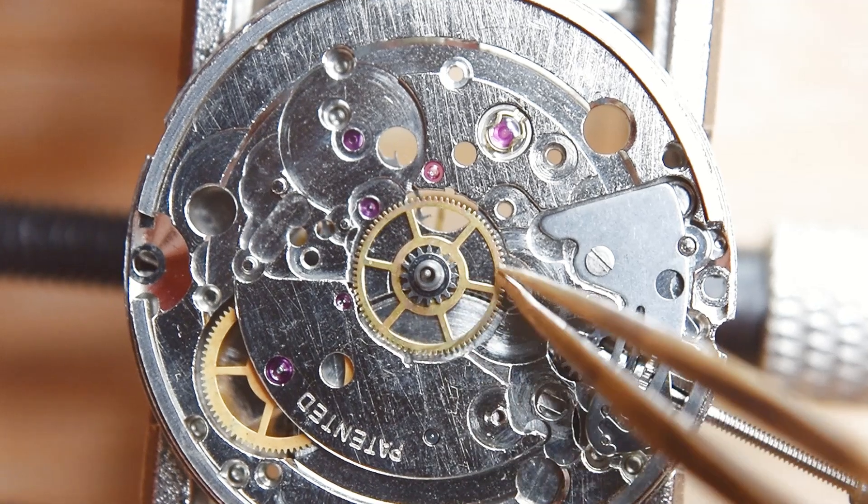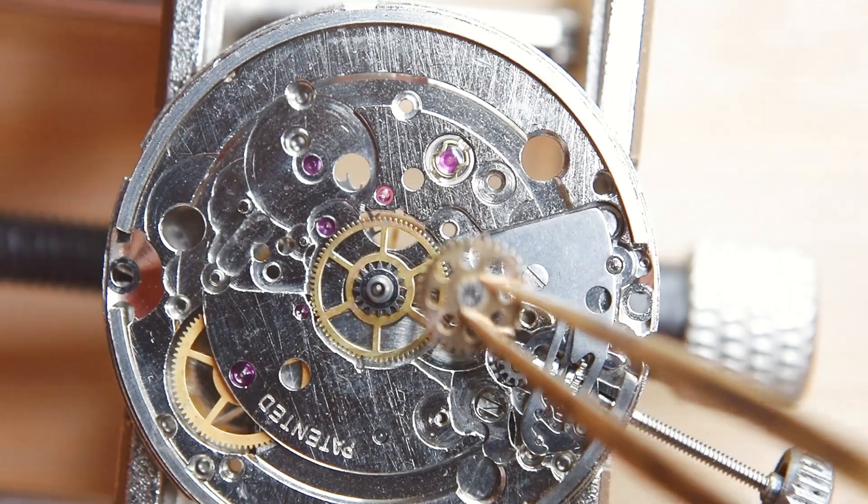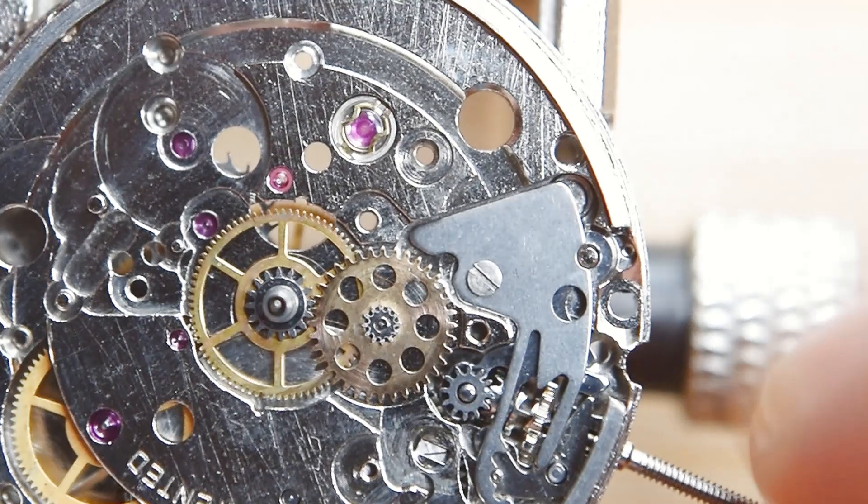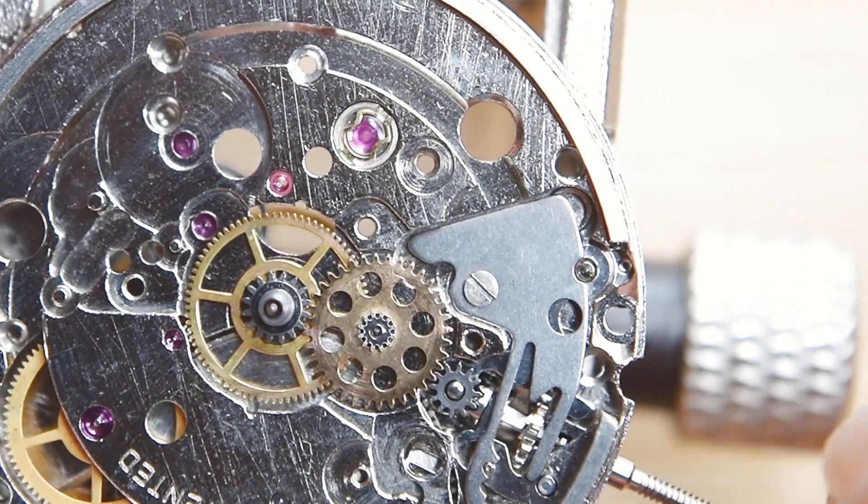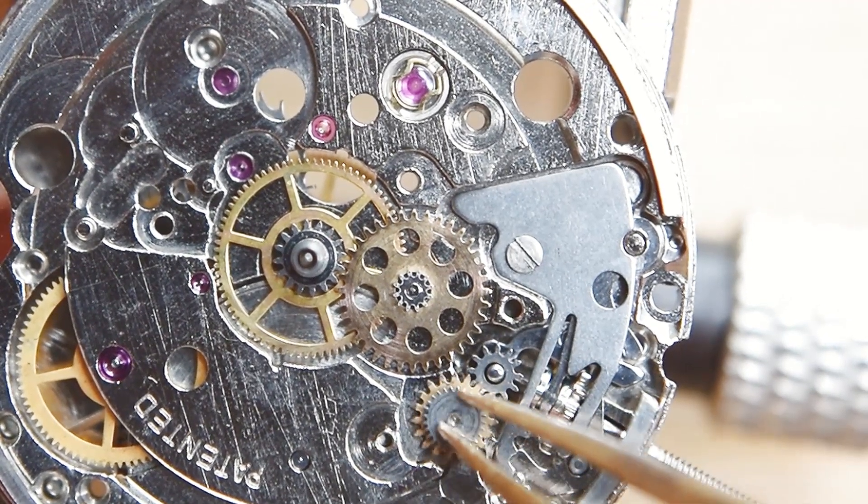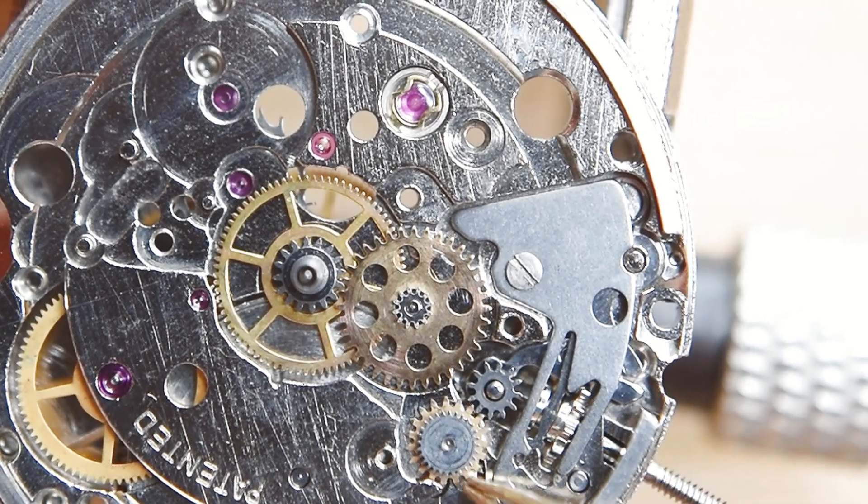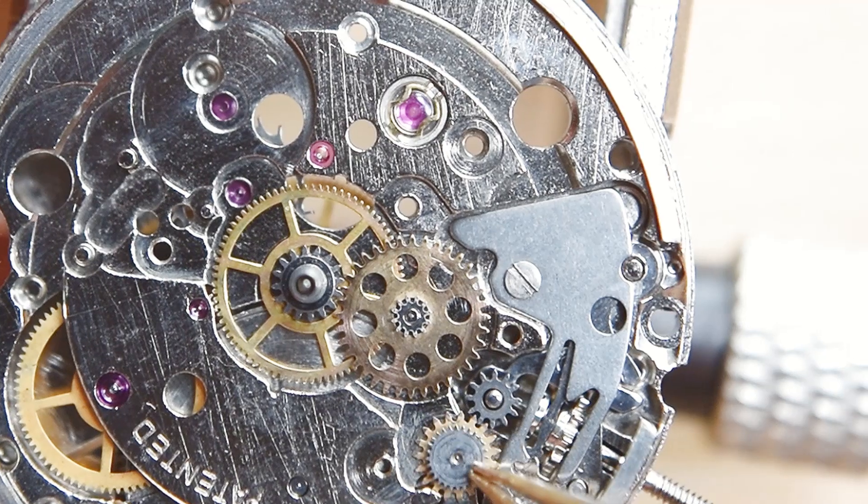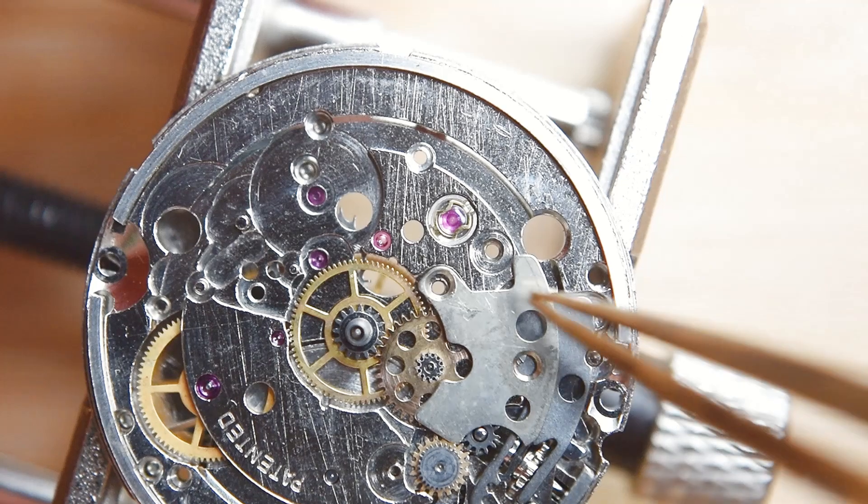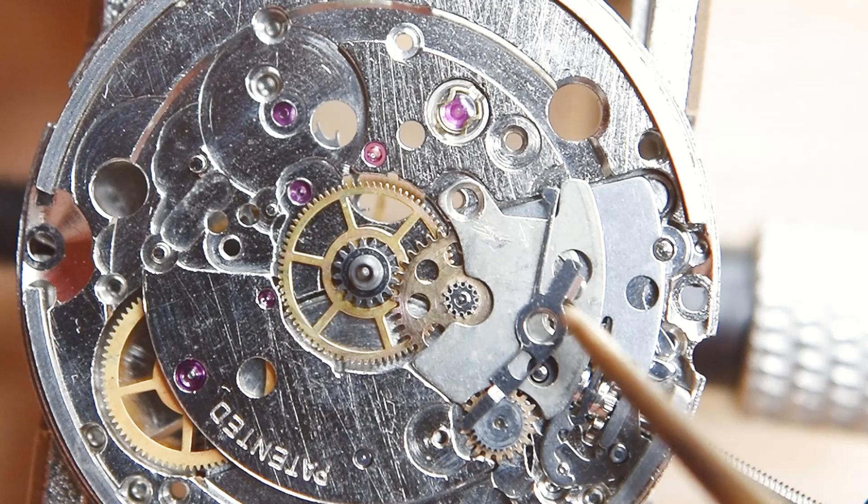I can now go on because the keyless work is finished with the center wheel. Of course, before this pivot was oiled. Each step I'm checking if all wheels engaging correct. That's very very important, because otherwise you can damage the teeth of these wheels and you have to replace them.